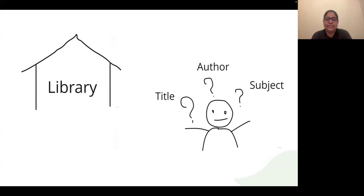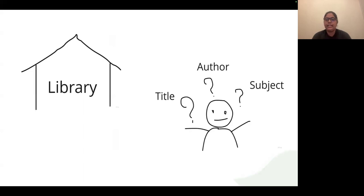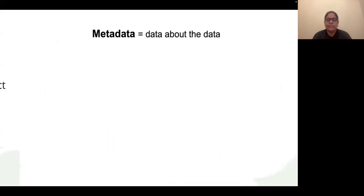You would start by looking for the title, the author, the subject — you use this information to identify that book from a large collection. What you did is think about the metadata, and then you searched for that book using that metadata. So metadata is essentially data about the data. It helps to organize, find, or understand a particular dataset.